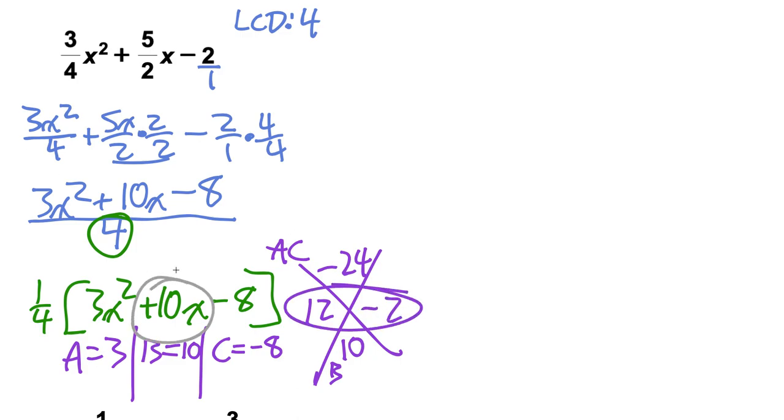We're just going to rewrite this middle term, this plus 10x, as 12x minus 2x, those numbers right there. Everything else is going to remain the same, they're basically static components.